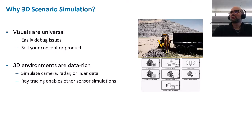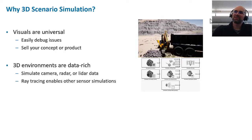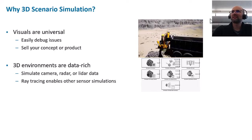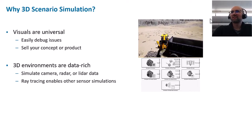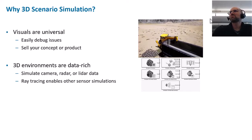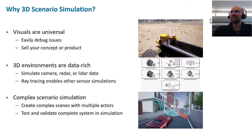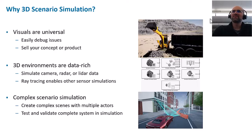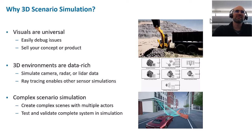Second, 3D environments are very data-rich. You can simulate advanced sensors — cameras, radar, lidar — and ray tracing in general enables other sensor simulations as well. Without the 3D environment, this is very hard to reproduce. Finally, it allows you to simulate complex scenarios: you can create scenes with multiple actors that are moving and test and validate the complete system, including sensors and the autonomy stack, in simulation.